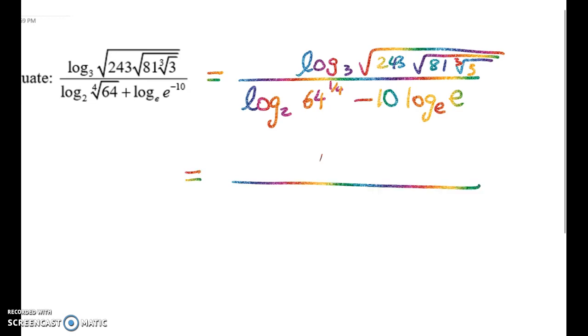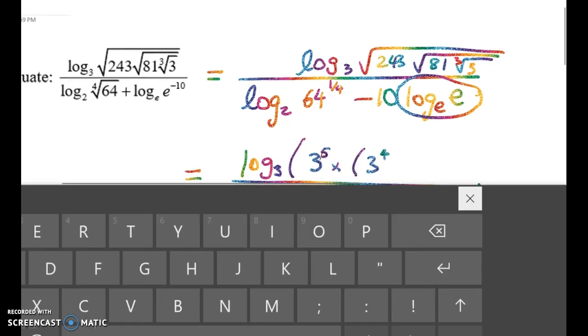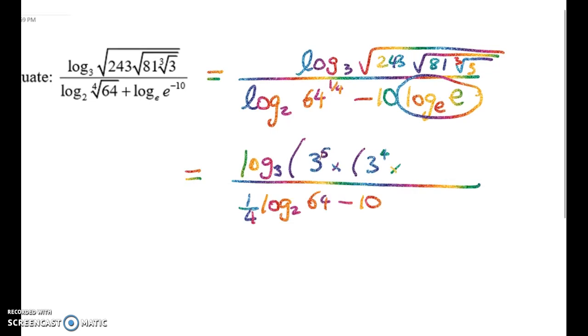So in the denominator, I get 1 quarter log to base 2 of 64 minus 10, because this is just 1. And up the top, let's start to do something here. Well, 243 is 3 to the power of 5 times 3 to the power of 4, 81, times 3 to the 1 third to the power of a half, and that's all to the power of a half.